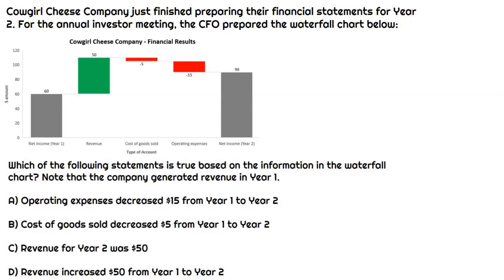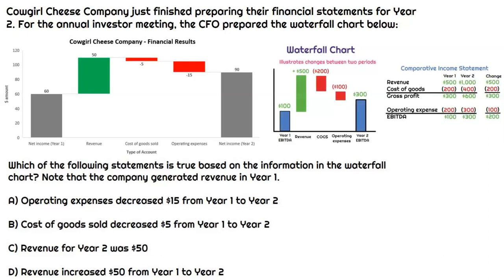We basically need to learn how to interpret and understand these waterfall charts. If you think back to the lecture, as you can see in this visual, this is the example we talked about. Remember, when it comes to a waterfall, we are bridging two periods and we want to understand the activity that either increases or decreases throughout the period. Use this one as a guide, but I'm going to focus on the waterfall chart for Cowgirl Cheese Company.